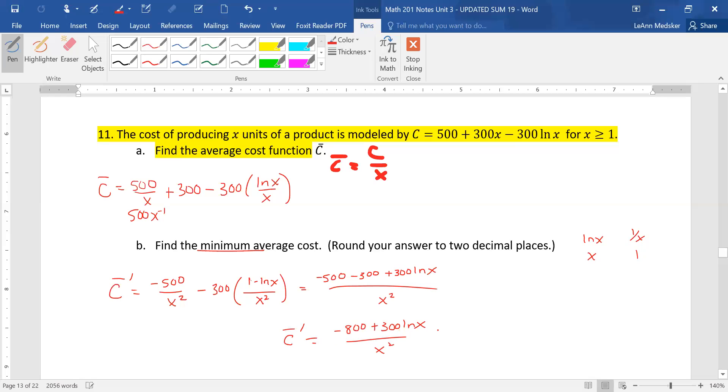And then remember the critical values are numbers where either the denominator does not exist for that derivative, or it's the top would be equal to zero. Now the bottom would be X equals zero, but that doesn't work because of our domain we were given. So we need to solve the negative 800 plus 300 natural log of X to see if we can find that minimum average cost value.